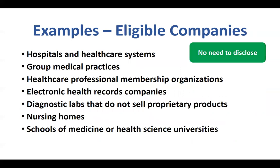These are examples of eligible companies that do not need to disclose. For example, an individual does not need to disclose Norton Healthcare or UofL. They don't need to disclose their physician practice name because these companies are all determined eligible. If a provider or speaker is on a committee or a member of a national foundation, such as the Kennedy Foundation or any of those types of organizations, those do not need to be disclosed.